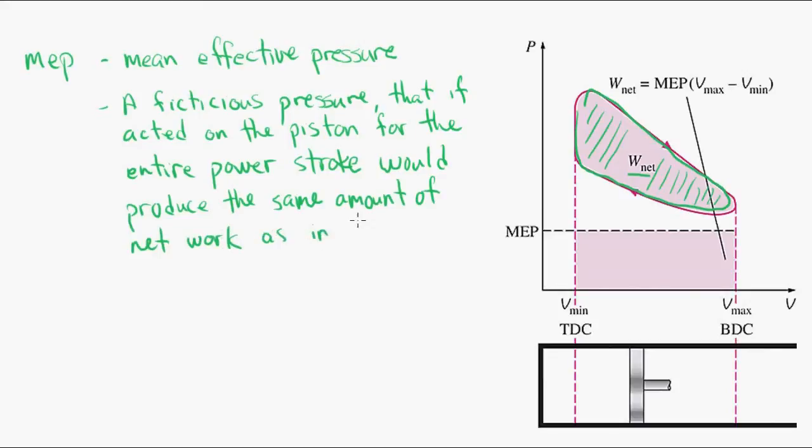So on that right, if we look back at the PV diagram, which goes between the two volumes, area under the rectangle defined by the MEP has the same area that's in the actual curve where the network is. So these two areas are equal.